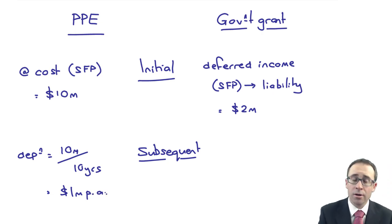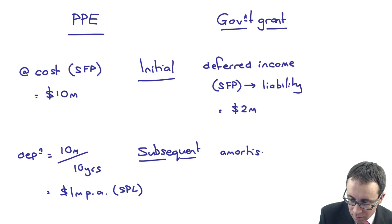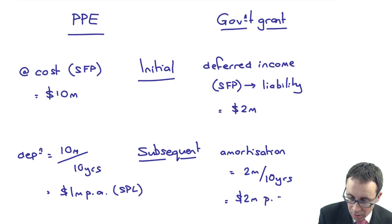Where does depreciation go? Profit or loss. So tell the examiner that you know that it is depreciation and expense. And then the deferred income, what do we have there? Well, you have the amortisation of that deferred income. So releasing it. And that's the $2 million over the same 10-year period, which is $2 million per annum.